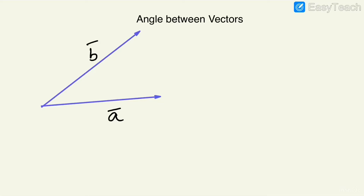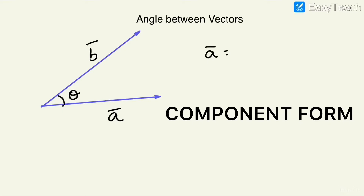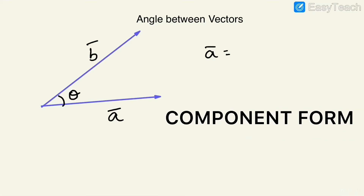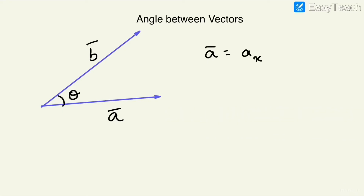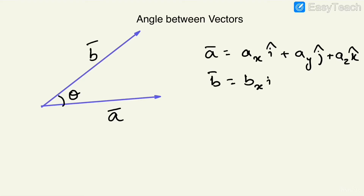We learned how to find the magnitude and angle if we have the angle between the two vectors, that is theta. But a common question comes: what if a vector is given in component form in the 3D Cartesian coordinate form, like ax·i-cap plus ay·j-cap plus az·k-cap? Similarly, vector B is given as bx·i-cap plus by·j-cap plus bz·k-cap. These two vectors are represented in component form.